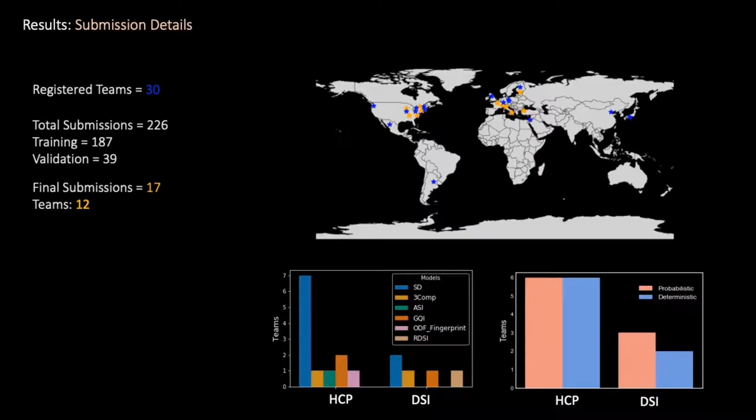Participants used both common off-the-shelf algorithms and more in-house developed algorithms that include spherical deconvolution, GQI and compartment models. We had roughly an equal number of probabilistic and deterministic tractography algorithms.